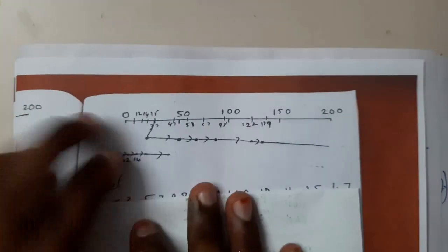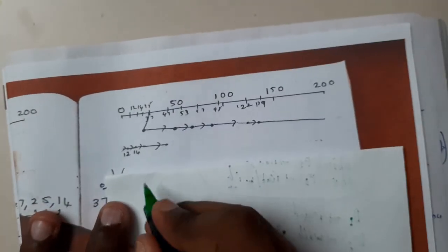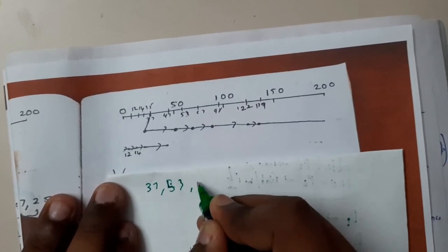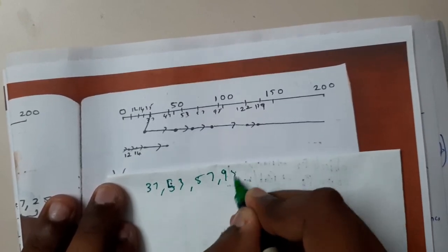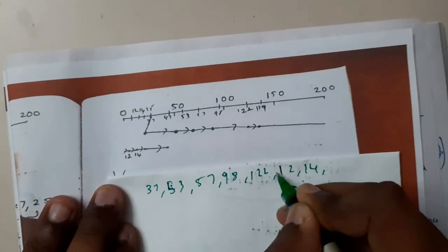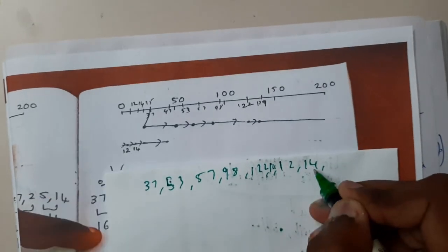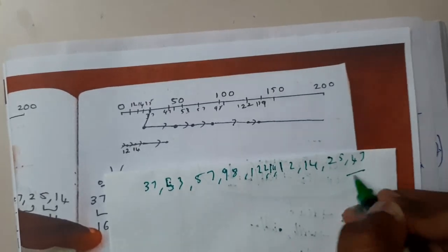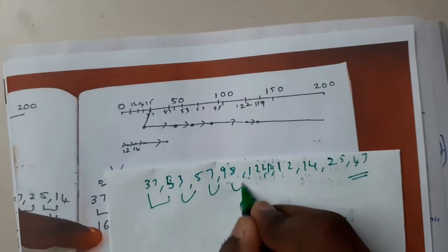Initially you will be writing the order in which you traveled. You started at 37, reached 53, then traveled to 57, then 98, then 122, then 129, then 12, 12 to 14, 14 to 25, 25 to 47. Now calculate the differences.